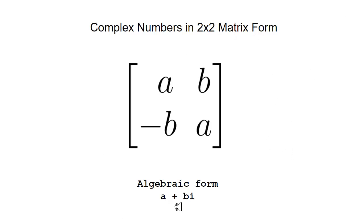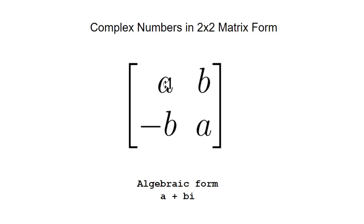This is a plus bi, the algebraic form of complex numbers — this is how they look in the 2x2 matrix format. Here you have 'a' on the forward diagonal which corresponds to the real component, and you have 'b' on the backward diagonal which corresponds to the imaginary component. The forward diagonal has the same sense, and the backward diagonal has opposite sense.